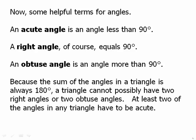Because the sum of the angles in a triangle is always 180 degrees, a triangle cannot possibly have two right angles or two obtuse angles. At least two of the angles in any triangle have to be acute.